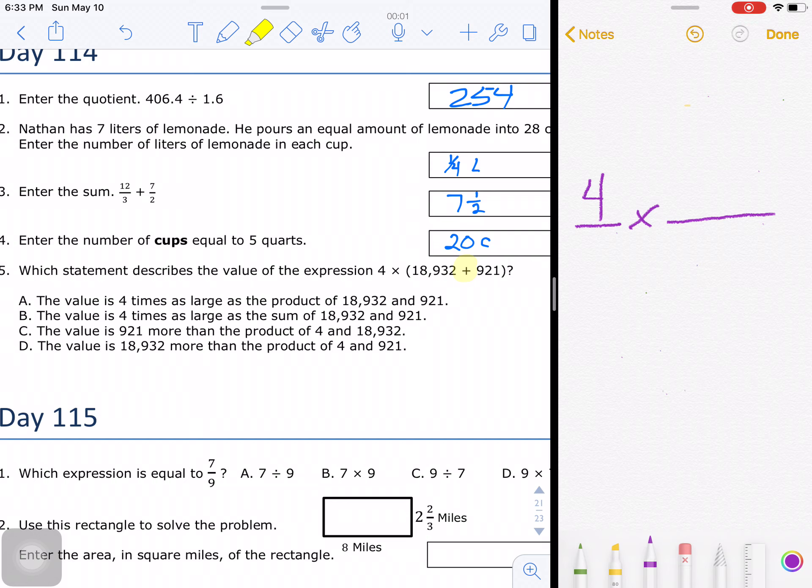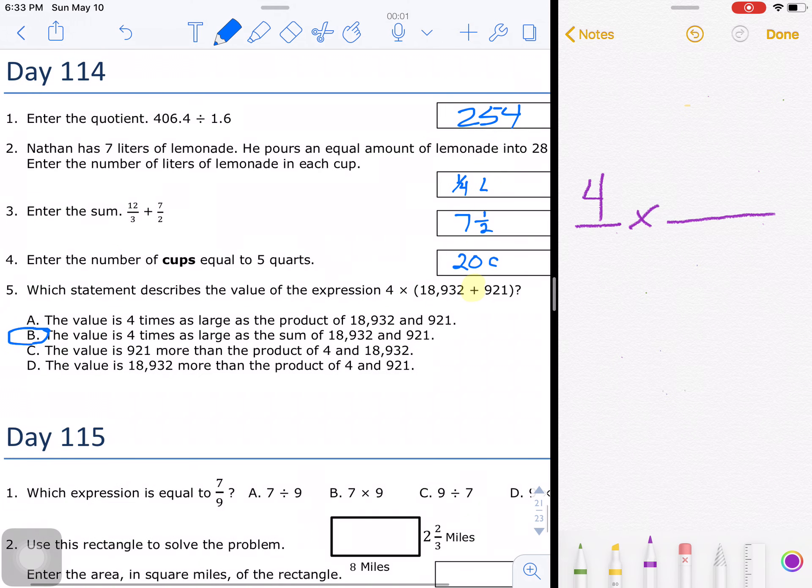It's not the product. 4 times the sum of something would be B. The value is 4 times as large as the sum of 18,932 and 921. So there you have it. Day 114 in the books.